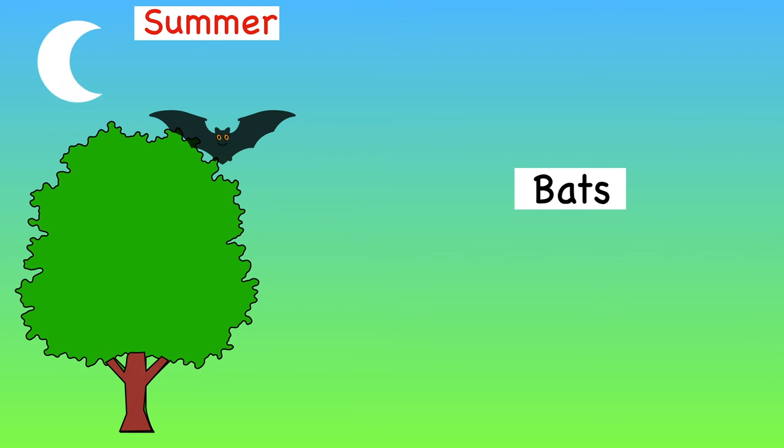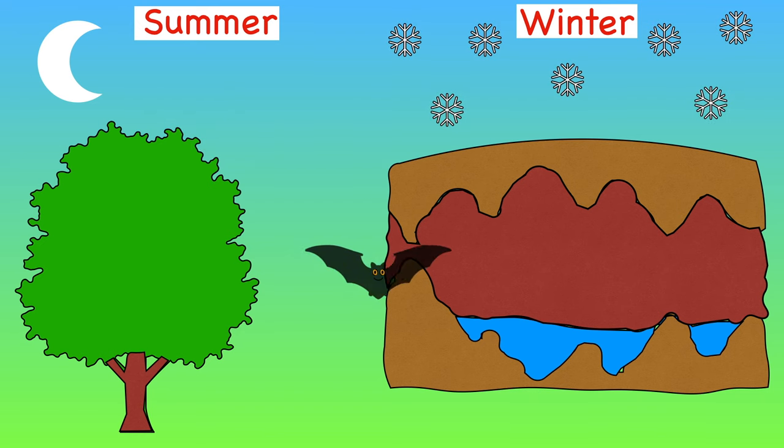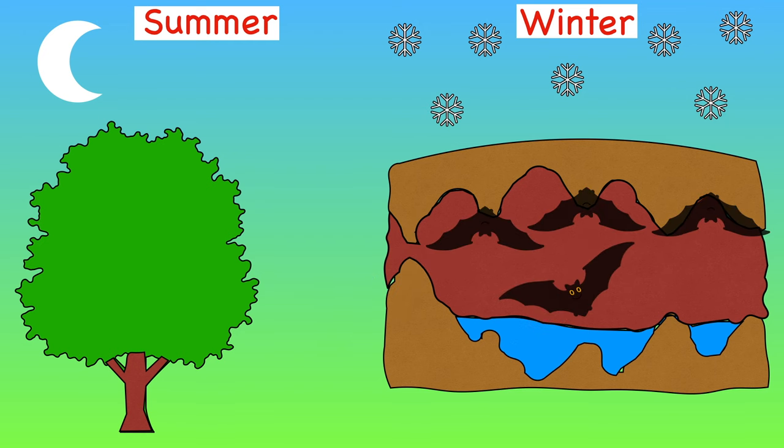Bats fly around our gardens at night in the summer time but in the winter some bats move to warmer places but some decide to stay and find comfort in dark quiet caves along with many other bats.